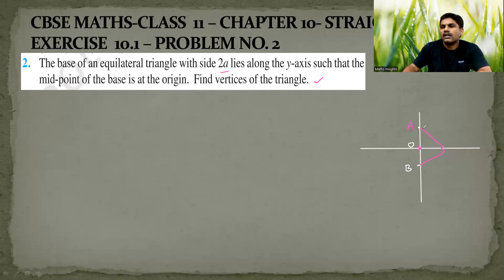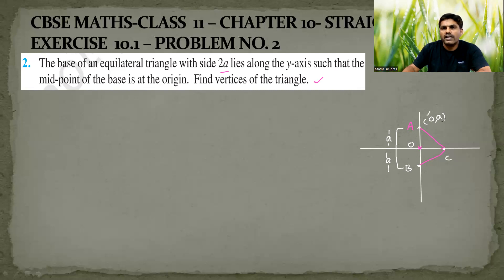You have to find the coordinates of vertex A, vertex B, and vertex C. You can easily say that the coordinates of vertex A are (0, a). Why? Because the base is 2a units in length and this is the midpoint, so this distance is a and this is also a. The point is on the y-axis, therefore the x-coordinate is 0 and the y-coordinate is positive a, because it is on the positive y-axis. Vertex B is also on the y-axis but on the negative y-axis, so its coordinates are (0, −a).